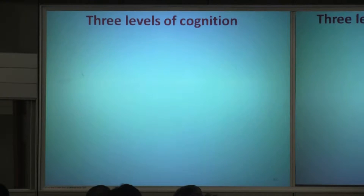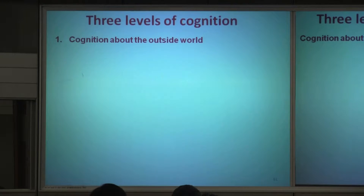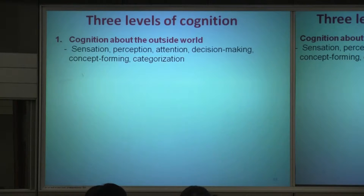I want to talk about cognition, because I just talked about changes at the synaptic level. Now we talk about cognitive processes. Everybody's interested in cognition. I think we can view cognition in three levels. Normally, we have cognition about the outside world — sensation, information from sensation, or motor action — so it depends on our perception of the outside world. This includes sensation, perception, and attention to a particular part of the information.